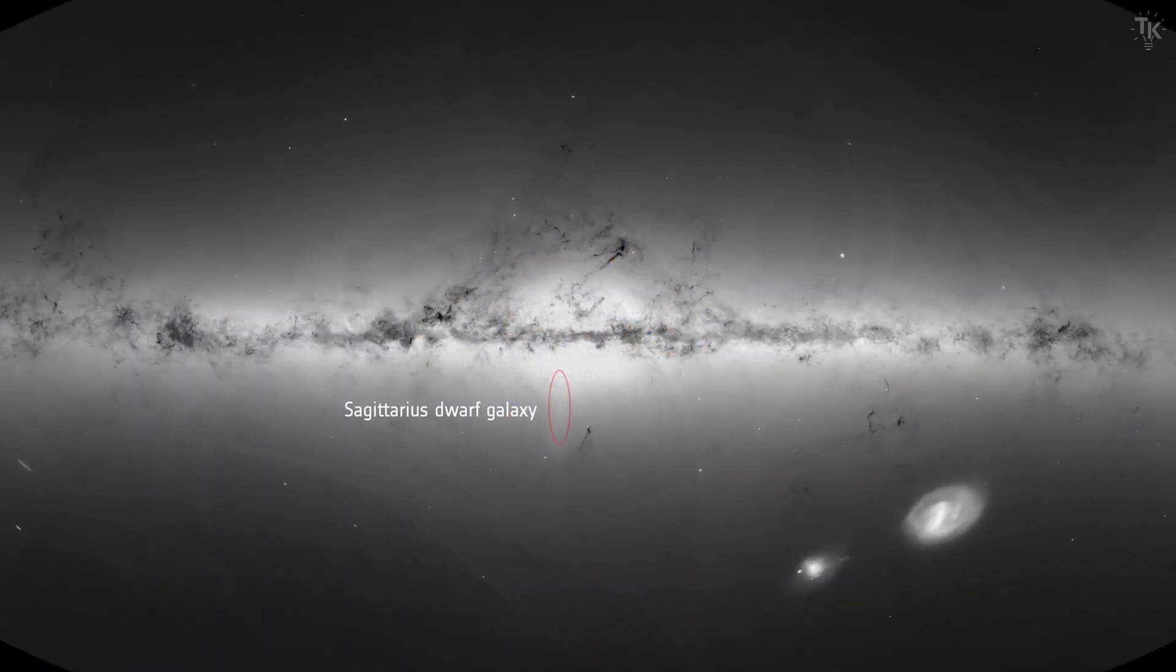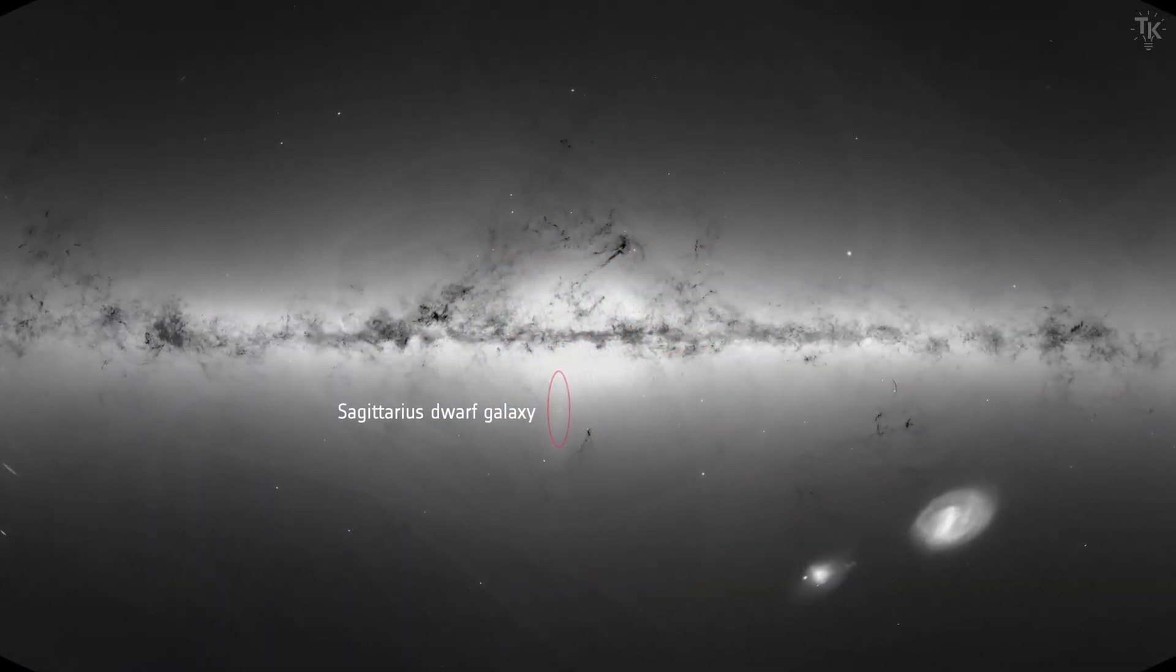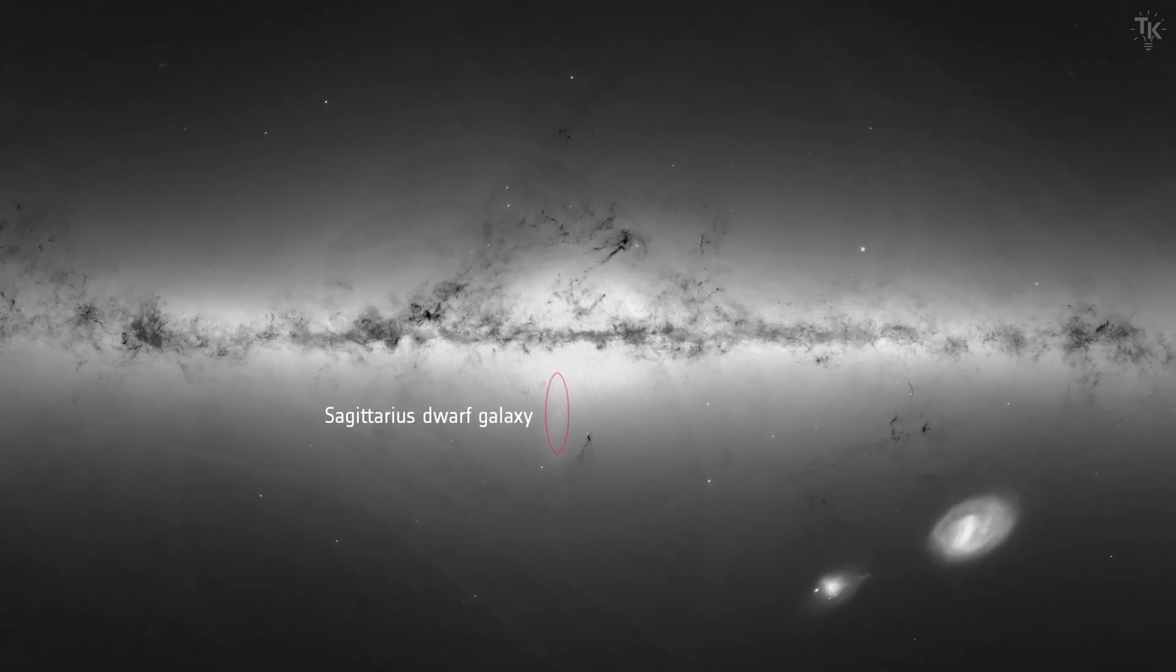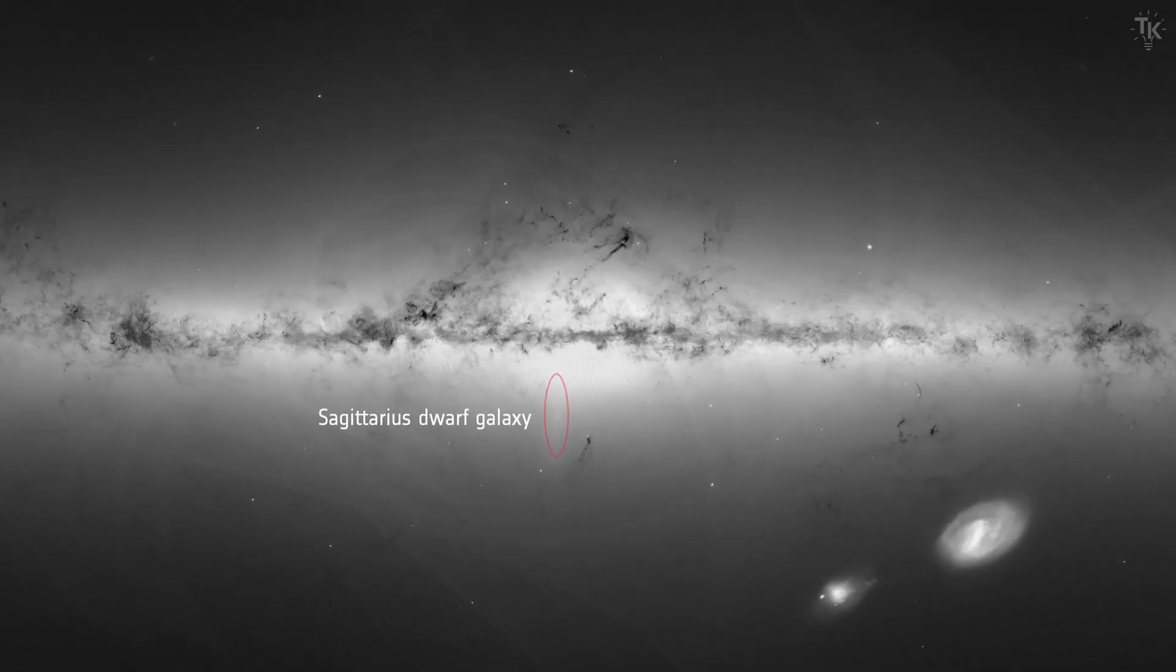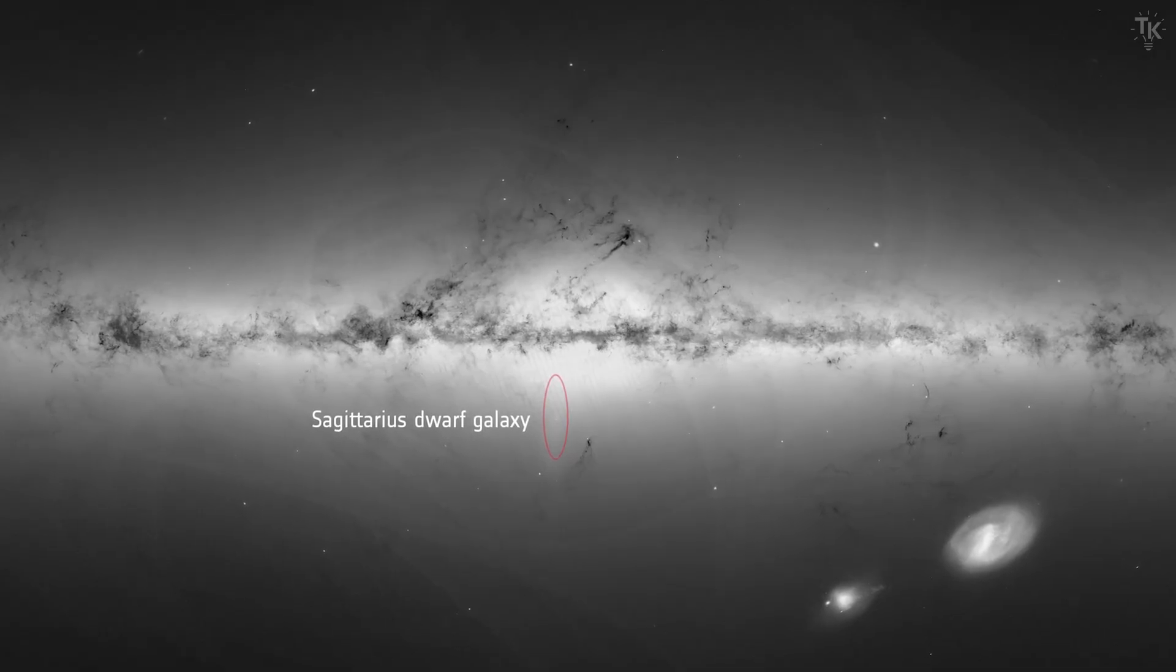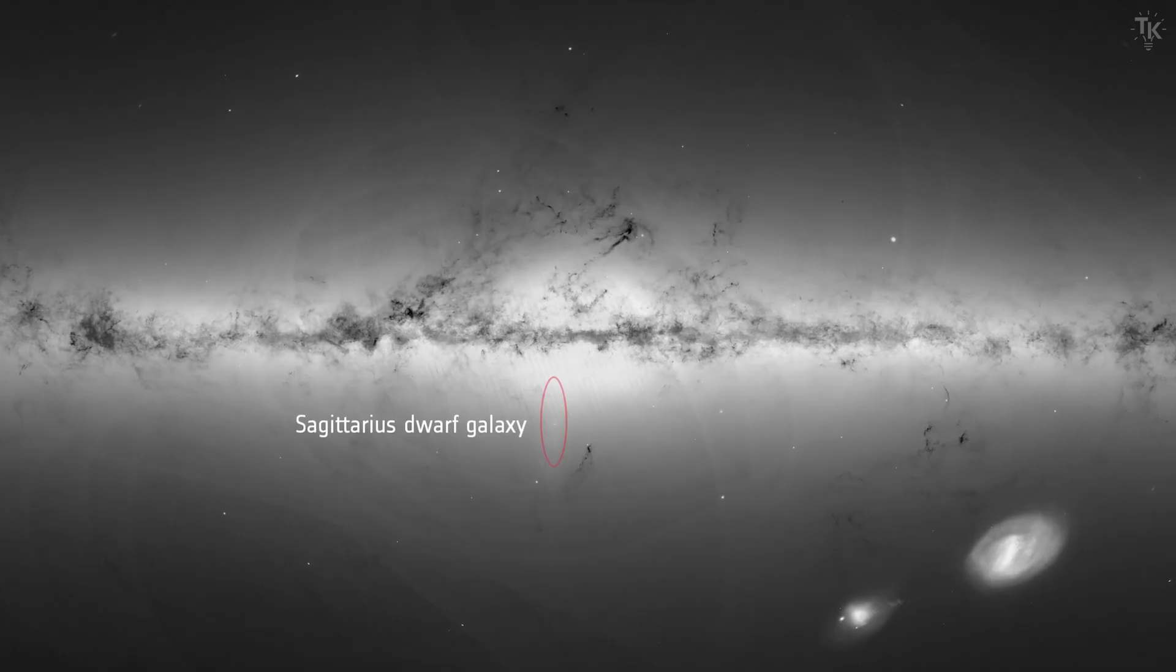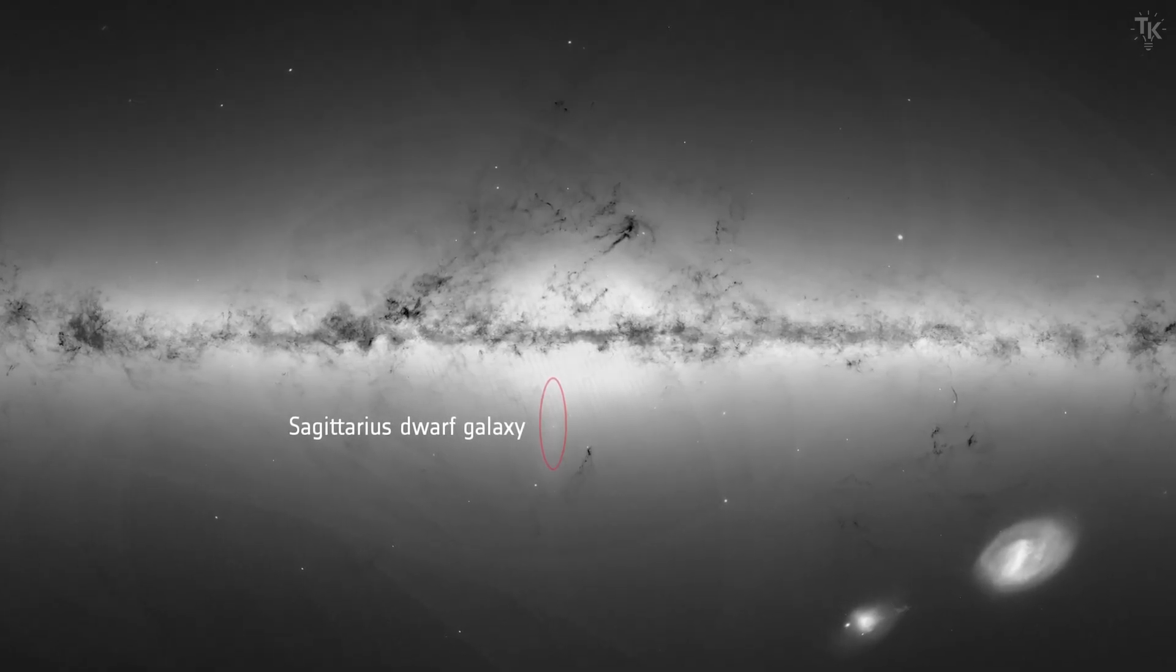Gaia has also studied the motion of the Sagittarius Dwarf Spheroidal Galaxy. Observations revealed that between 5.7 and 1 billion years ago, it collided with the Milky Way three times. These collisions stirred up the gas and dust inside the Milky Way, triggering the birth of many stars.